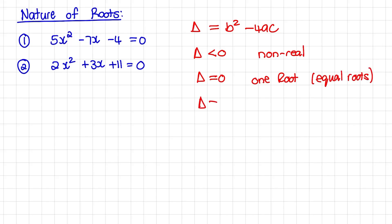And when delta is bigger than 0, we have two possible explanations. The roots would be real. But if delta is a perfect square, we say the roots are real and rational.